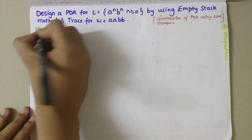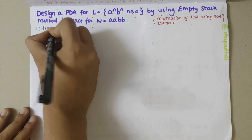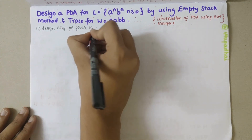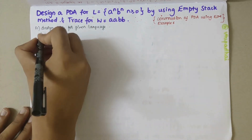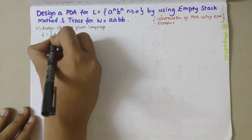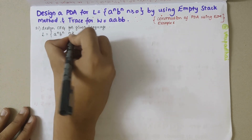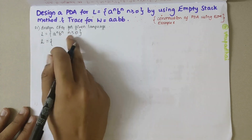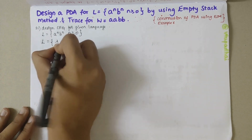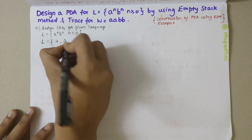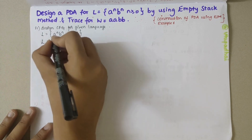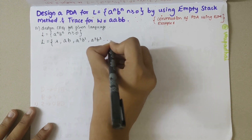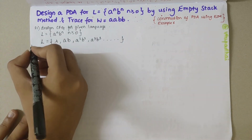The first step is to design a context-free grammar (CFG) for the given language. The language is L = aⁿbⁿ where n ≥ 0. Expanding: when n = 0 we get the empty string lambda; when n = 1 we get ab; when n = 2 we get a²b²; when n = 3 we get a³b³, and so on.